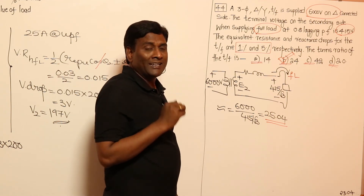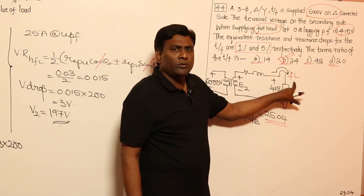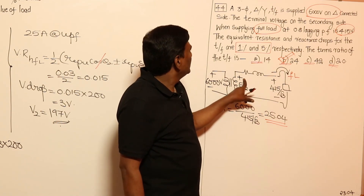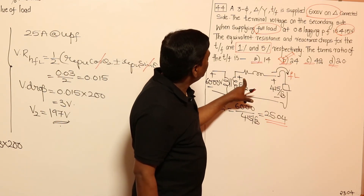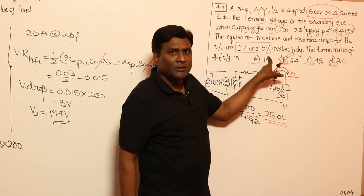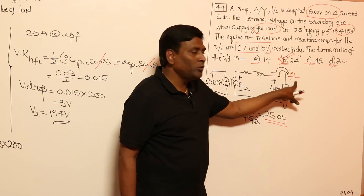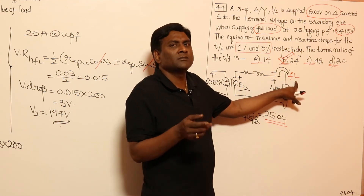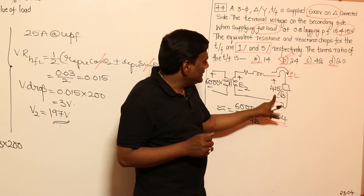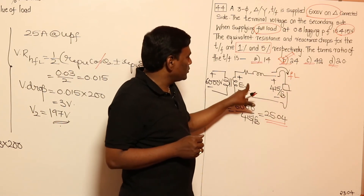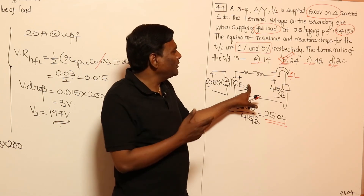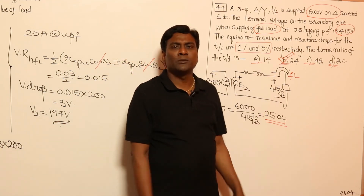Ideally, if this were a descriptive exam like IES, with full load and Re, Xe given, I would compute: voltage regulation = Re per unit × cos θ₂ + Xe per unit × sin θ₂ (plus sign for lagging). With Re = 1% and Xe = 5%, I calculate the voltage drop, add to V2 to get E2, and divide 6000 by E2 for the exact turns ratio. But in a multiple choice exam with widely spaced options, the approximation is sufficient.